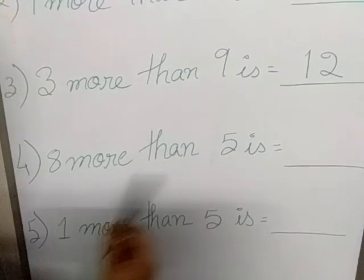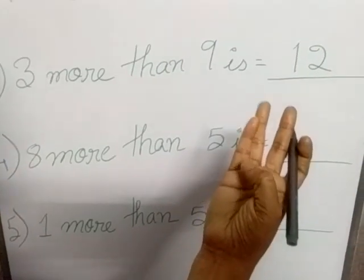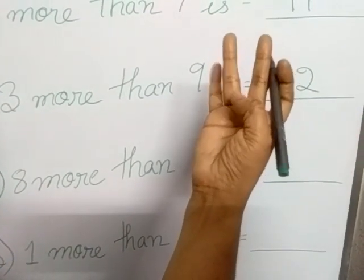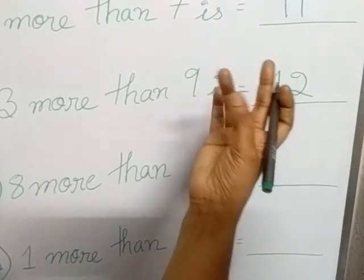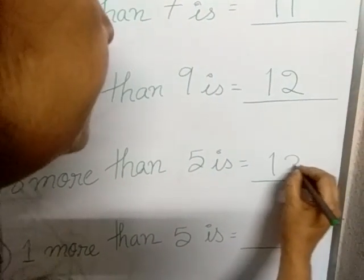Now 8 more than 5 is 5 plus 8. 5, 6, 7, 8, 9, 10, 11, 12, 13. You write here 13.